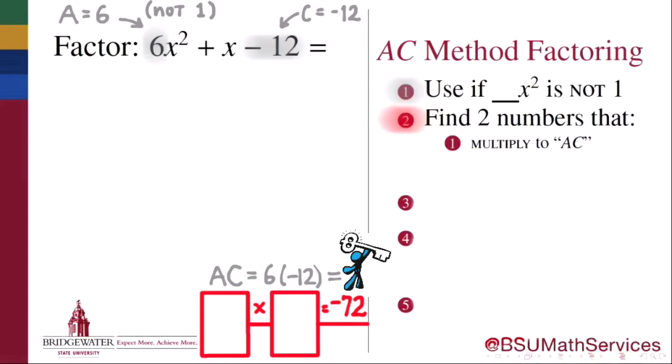The other part, the sum part of this method, remains the same. The pair of numbers that we find have to add together to give us the coefficient of x, which in this example is 1. So to get this method going, what I need are a pair of whole numbers, integers, if they exist, whose product is negative 72, and whose sum is positive 1.